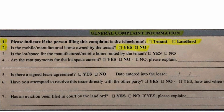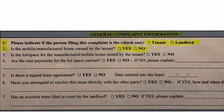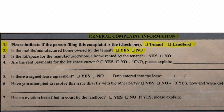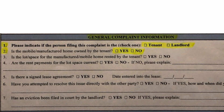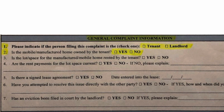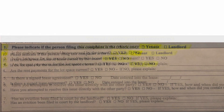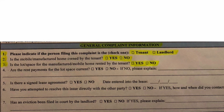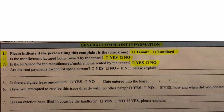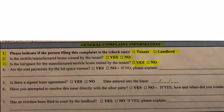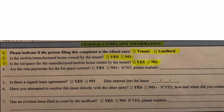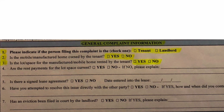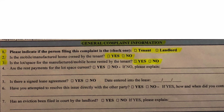Number two: is the mobile manufactured home owned by the tenant? Do you own your home? Mark yes or no to the one that applies to you. Number three: is the lot space for the manufactured mobile home rented by the tenant? I presume that if you're in a park, you are renting the dirt under your trailer, so you would mark yes — but mark the one that applies to you.